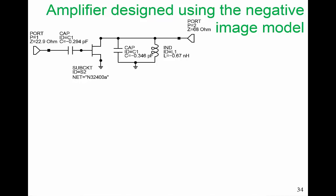Here is the negative image model that we ended up with at the end of our design. We have a negative capacitor at the input, a negative capacitor and negative inductor at the output, and we see that we had to change the port impedances away from 50 ohms — 22.9 ohms at the input and 68 ohms at the output. But there are only five unknown numbers here.